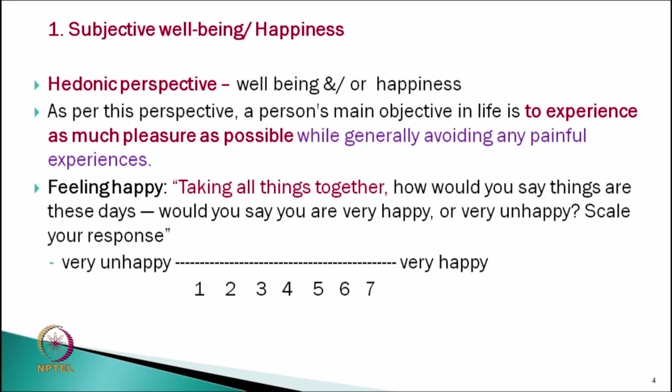As per this perspective, a person's main objective in life is to experience as much pleasure as possible while generally avoiding any painful experiences. If we are experiencing pleasure and avoiding pain, then we have happiness. For assessing this type of happiness, we ask participants: taking all things together, how would you say things are these days? Would you say you are very happy or very unhappy? The scale runs from very unhappy to very happy.